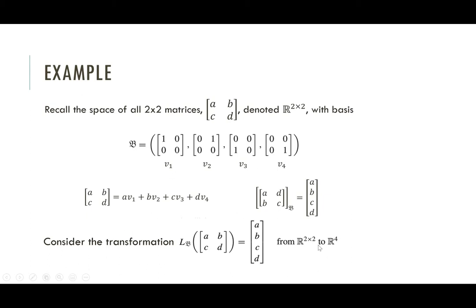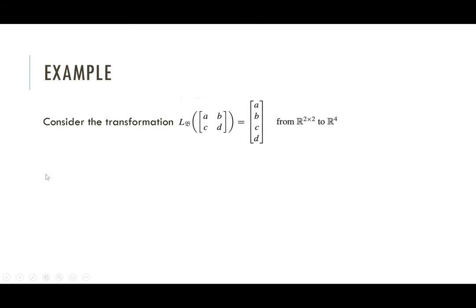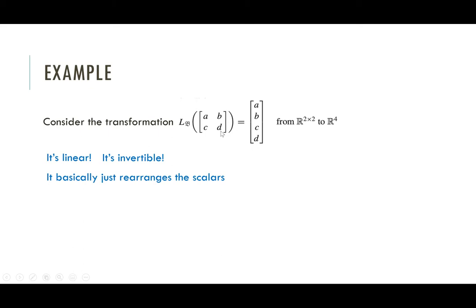What do we know about this transformation? It's linear — you proved that in class. It's also invertible, and the inverse you can just read off: if I give you some coordinate vector ABCD, you know exactly what matrix it came from. Really, if you think about it, it's just rearranging the scalars. It's taking the entries ABCD, and instead of writing them in a 2 by 2 array, it's writing them in a list.